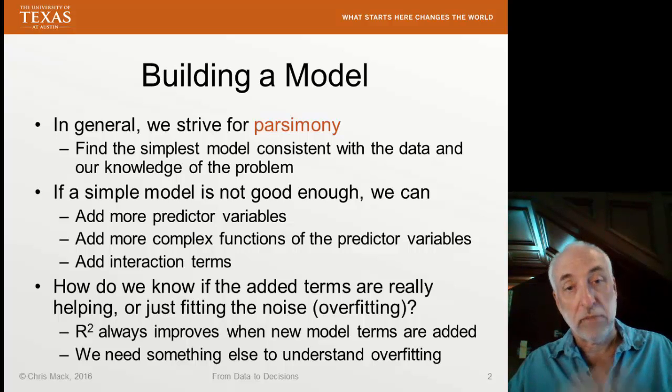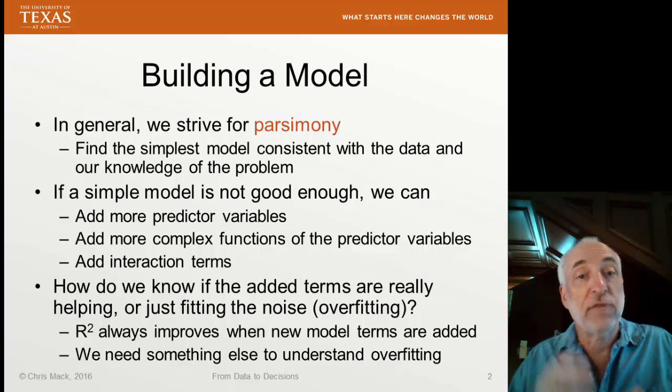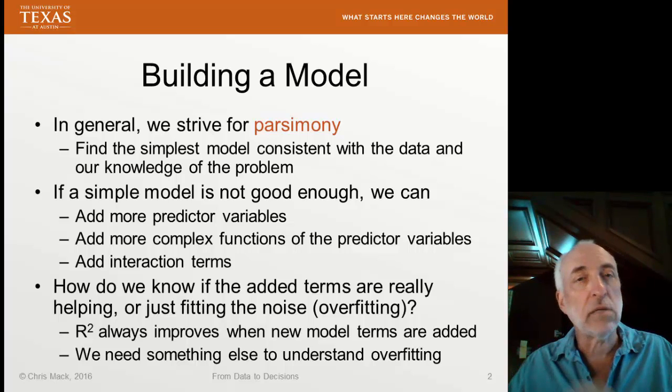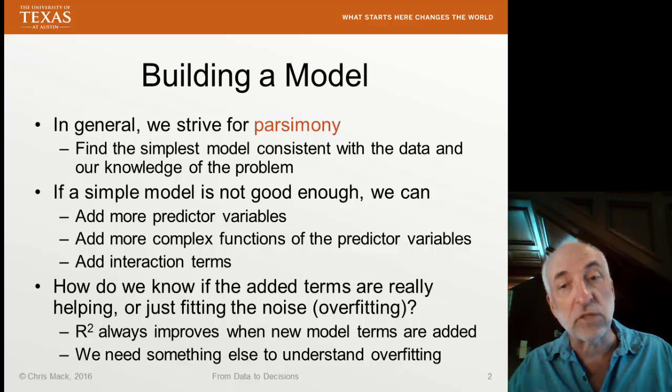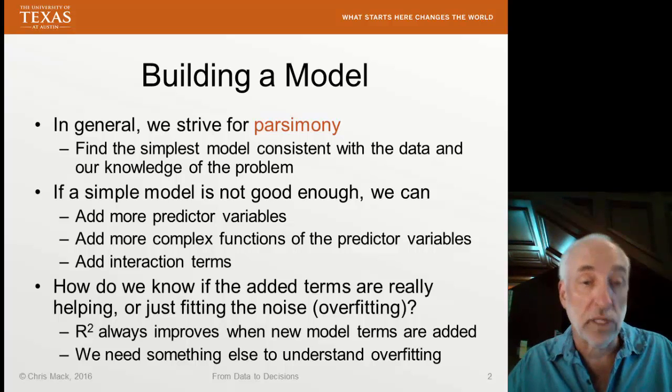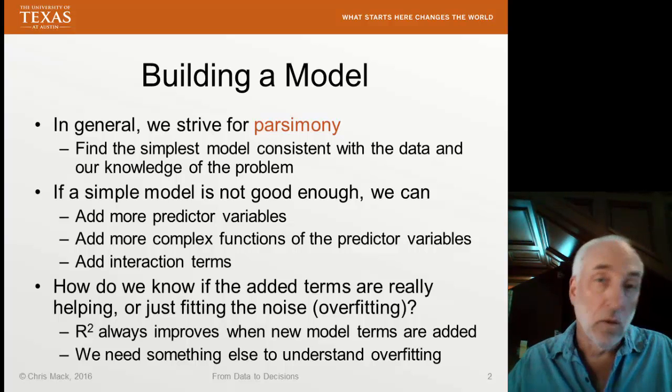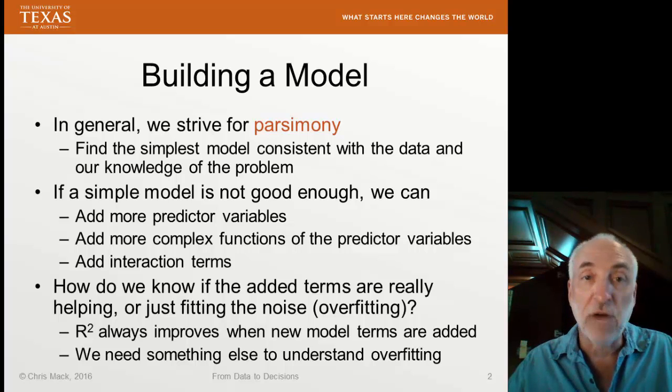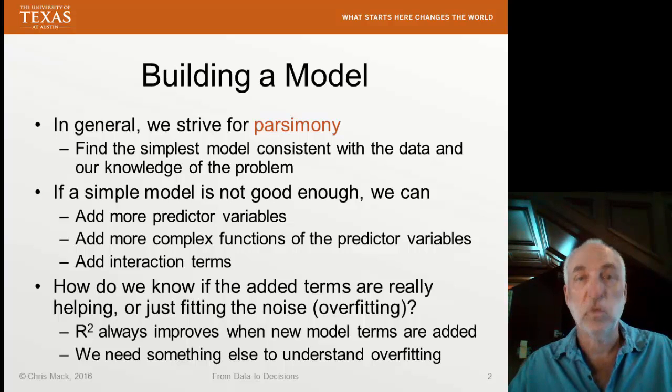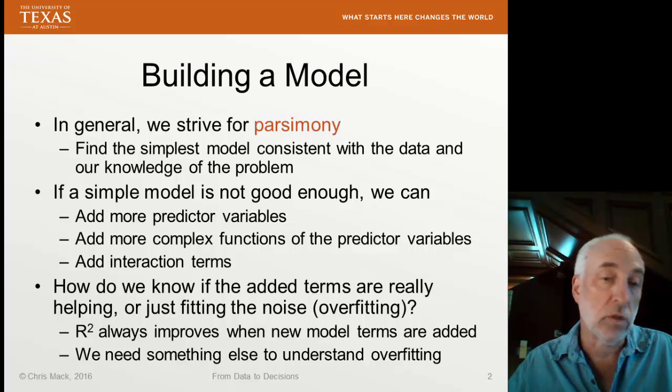When you add these terms, extra predictive variables, complex functions, interaction terms, how do you know that when you build this model you're actually doing something useful with these terms? How do you know you're not just fitting the noise? Something we call overfitting? Well, we could use R-squared to tell us how good the model is. And that's fine if you're comparing two models with the same number of adjustable parameters. But R-squared always gets better when you add more model terms. So I can't use R-squared to compare a model with fewer terms to a model with more terms.